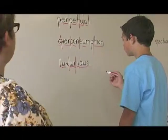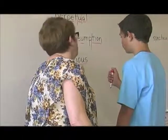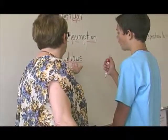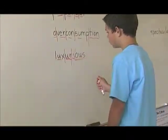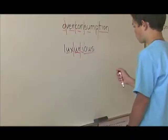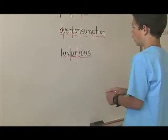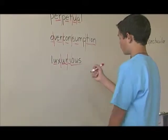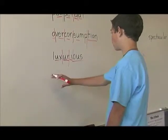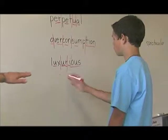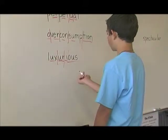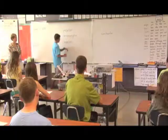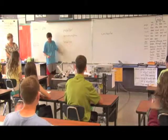What would this have been before you added that on? It would have been a Y. And what do you think the sound of that Y would have been? E — so you could say I at the end of the syllable. Luxurious. Just read it — luxury. Luxury. Luxury. Luxurious. Luxurious. Read it to the class. Luxurious. Luxurious.